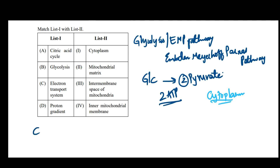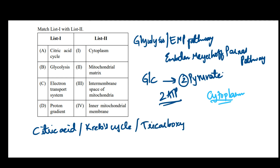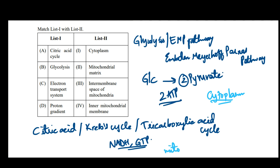Next is the citric acid cycle. Citric acid cycle is also known as Krebs cycle, or it is also known as tricarboxylic acid cycle. During this process, there will be generation of reducing powers like NADH and GTP, which are later used for ATP generation. This citric acid cycle takes place in the mitochondrial matrix.